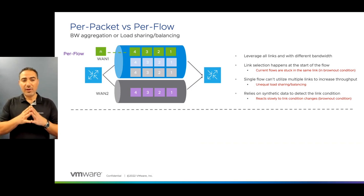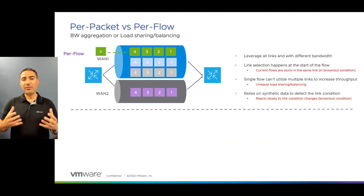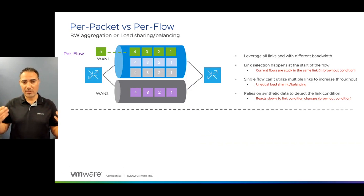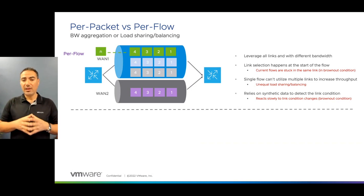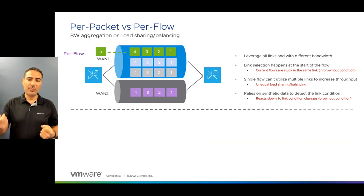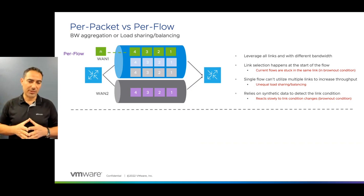Finally, devices using per-flow most of the time rely on synthetic data they generate on these circuits to discover the brownout condition or to assess link health. This gives them a slow reaction to brownout conditions, because they have to wait and measure the circuit based on this synthetic data and how frequently they send it.